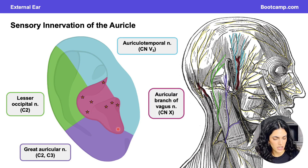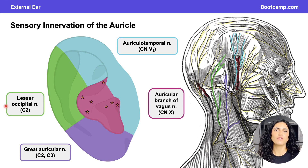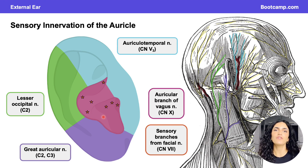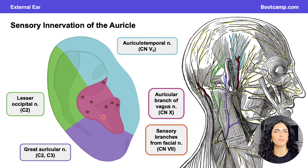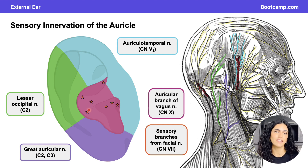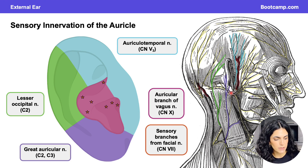Along the concha, shown in pink, innervation is provided by the auricular branch of the vagus nerve — cranial nerve 10. The vagus nerve travels through the tympanic cavity, giving off sensory branches to supply the concha and parts of the external acoustic meatus. There is also some supply from the facial nerve, which travels through the facial canal and gives off sensory branches to the concha and external acoustic meatus — represented by orange stars here — intermixed with the vagus branch. The facial nerve's main function, however, is providing motor innervation to the muscles of facial expression.